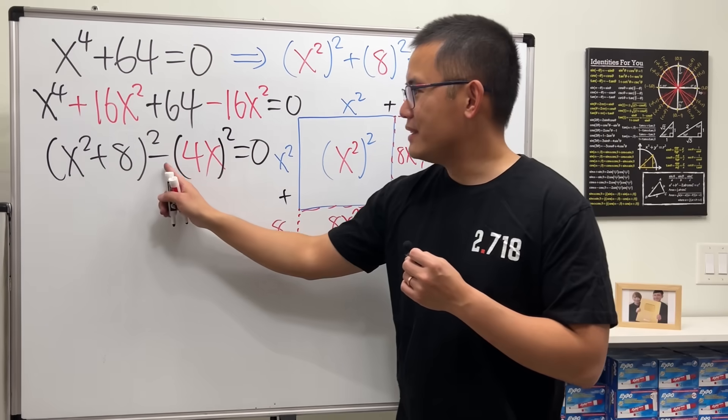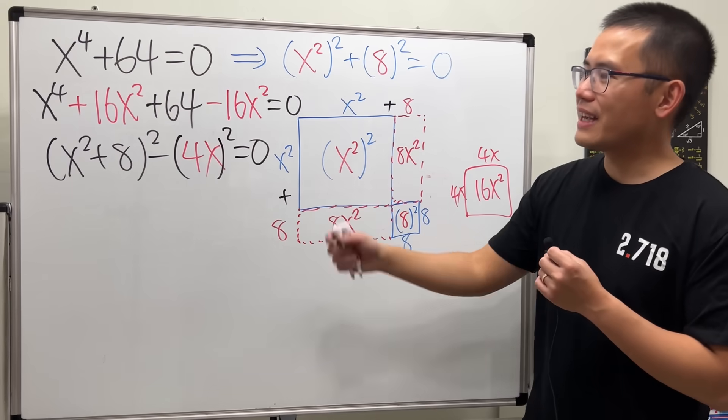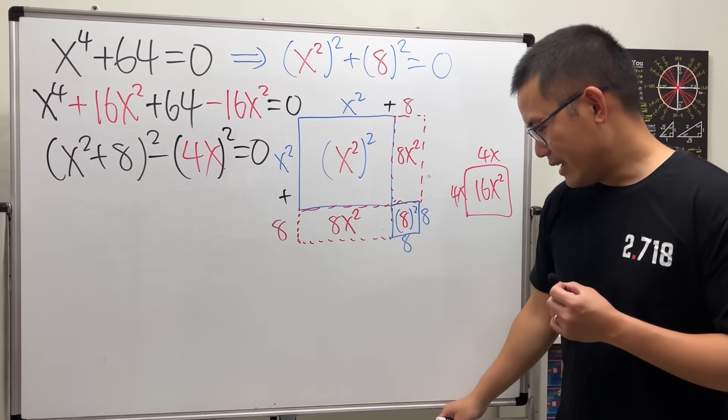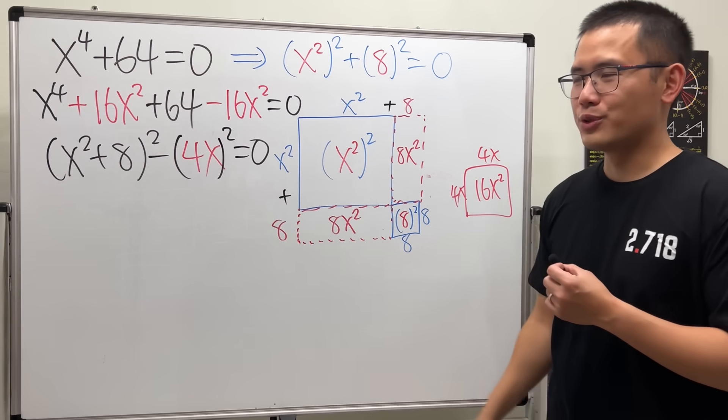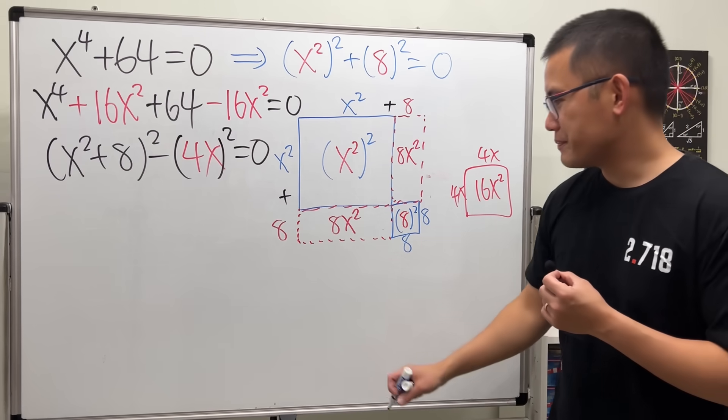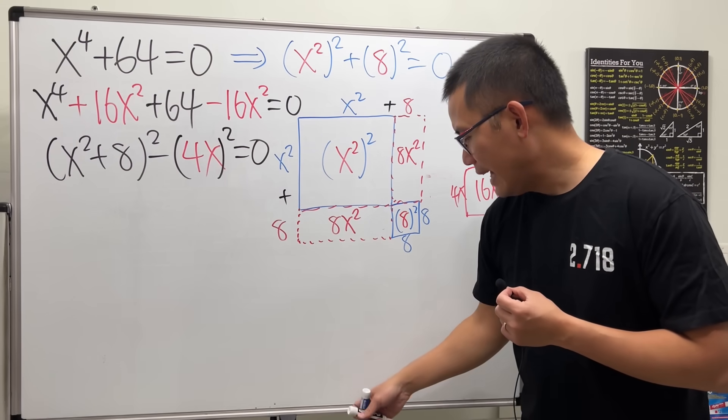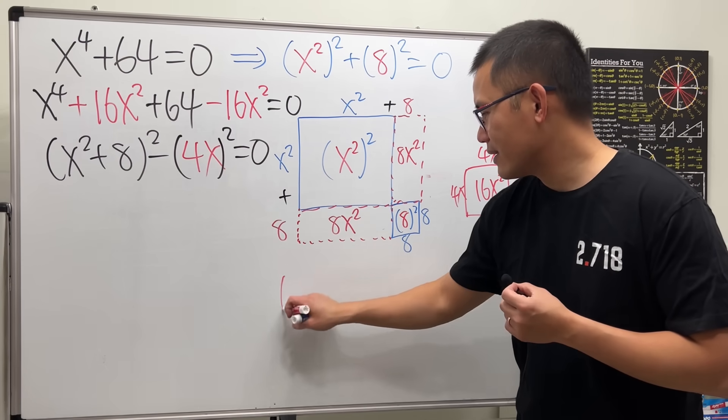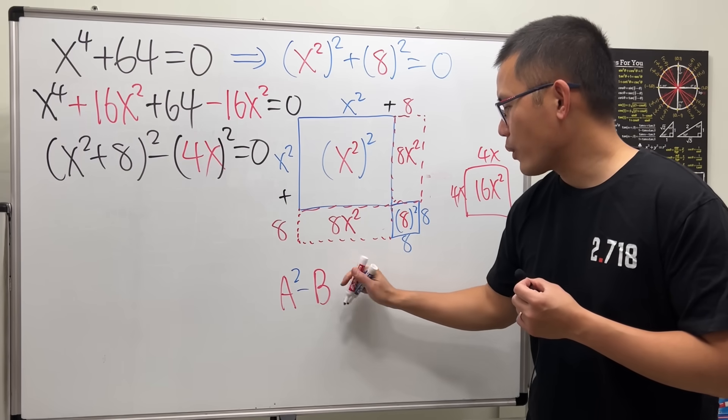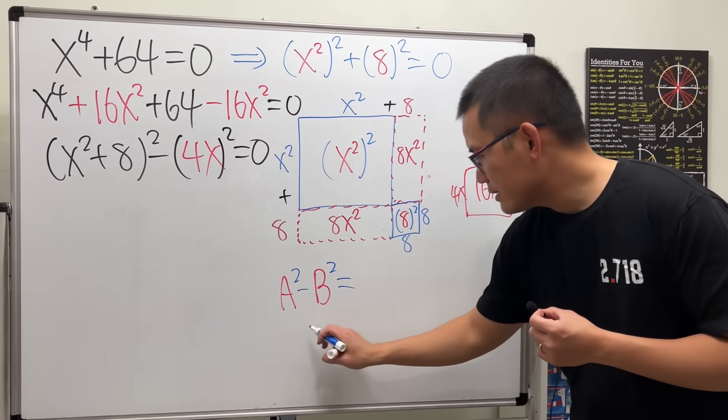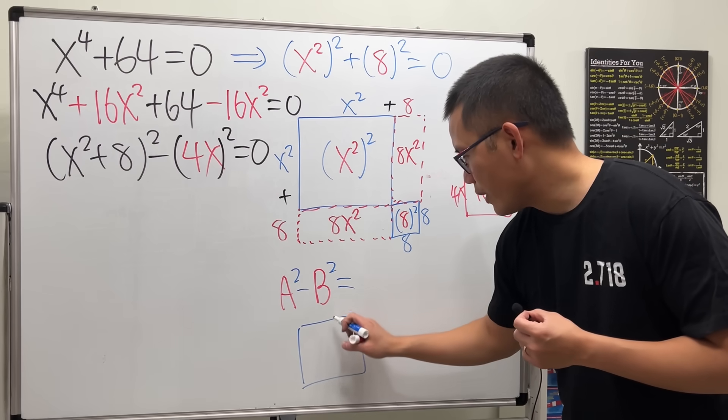Now, we have a difference of two squares. So, we can factor it the usual way. And of course, since I'm on geometry, I'll also show you guys a geometric interpretation for that. If we have a squared minus b squared.